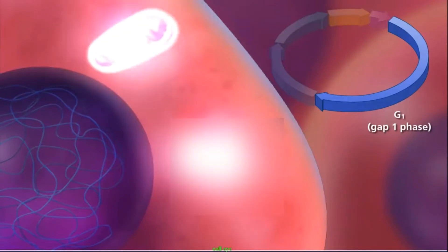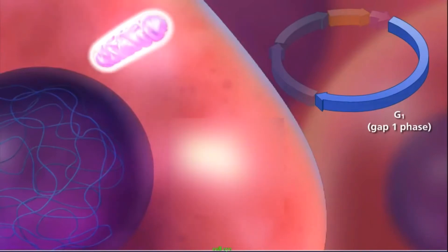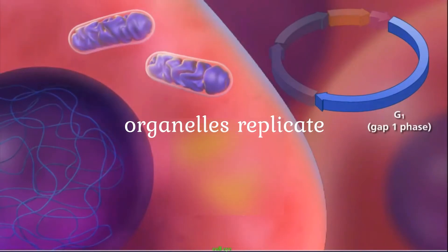G1 phase is the period prior to the synthesis of DNA. In this phase the cell increases in mass as organelles double or are synthesized in preparation for cell division. The G1 phase is also known as the first gap phase.